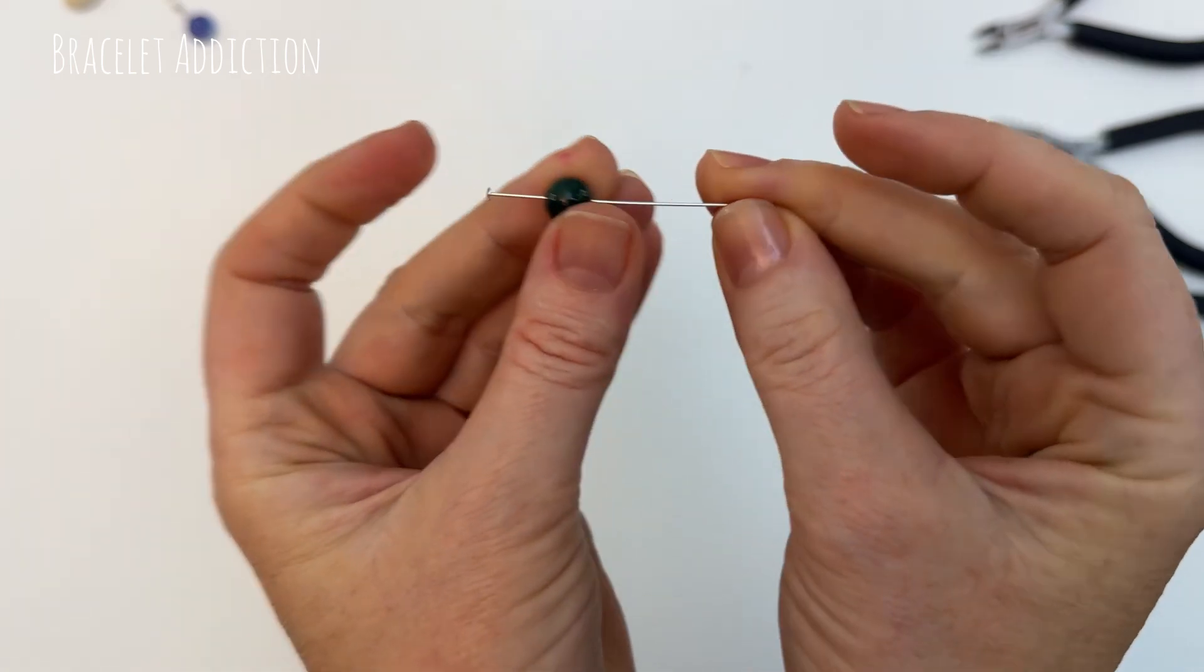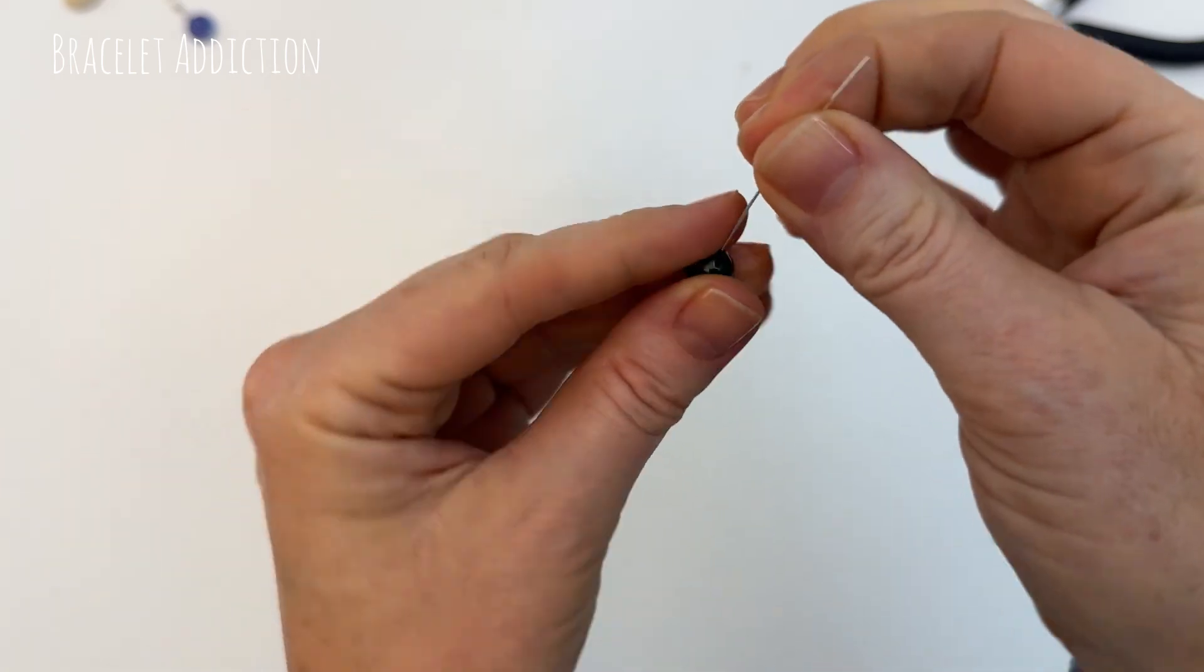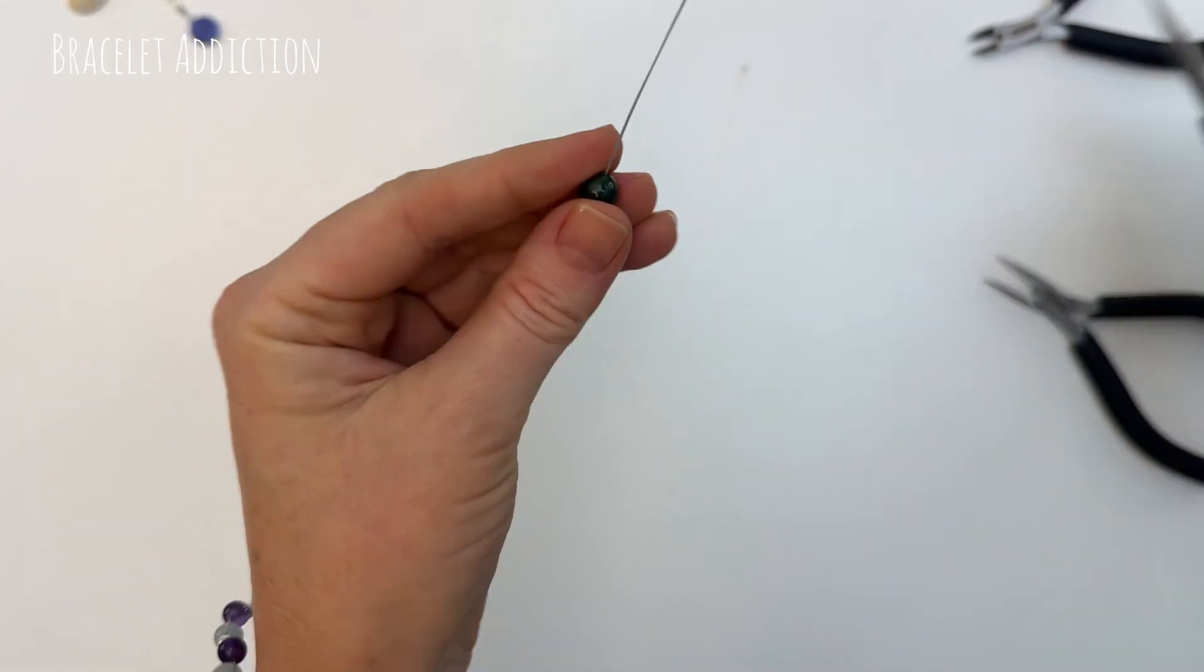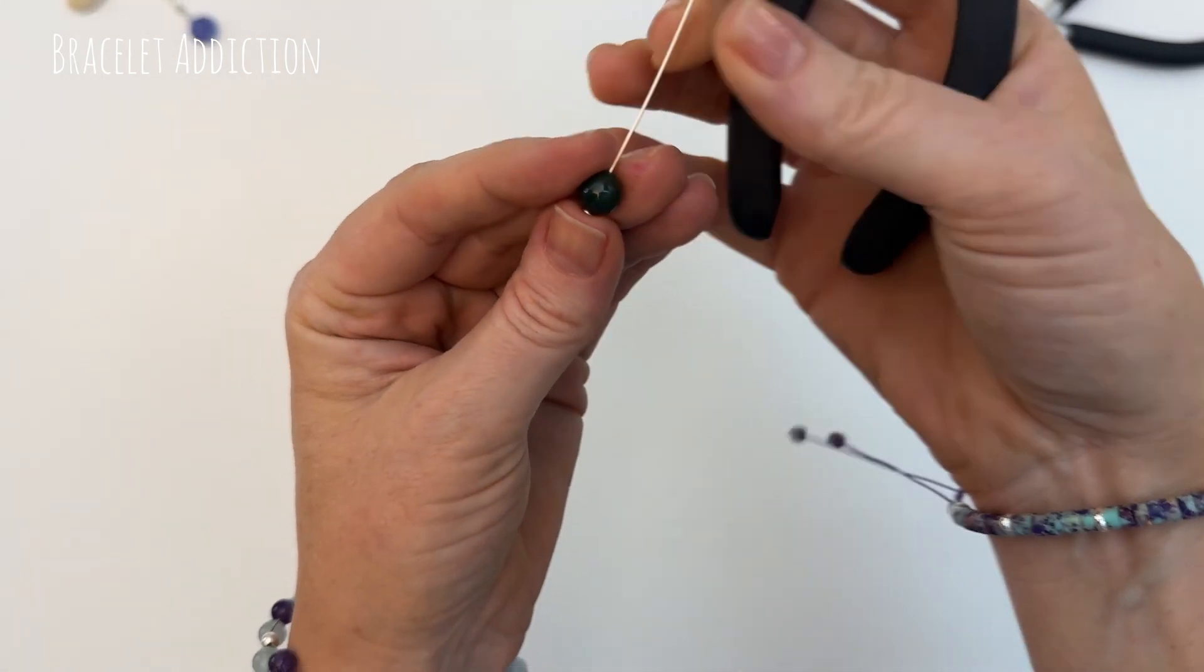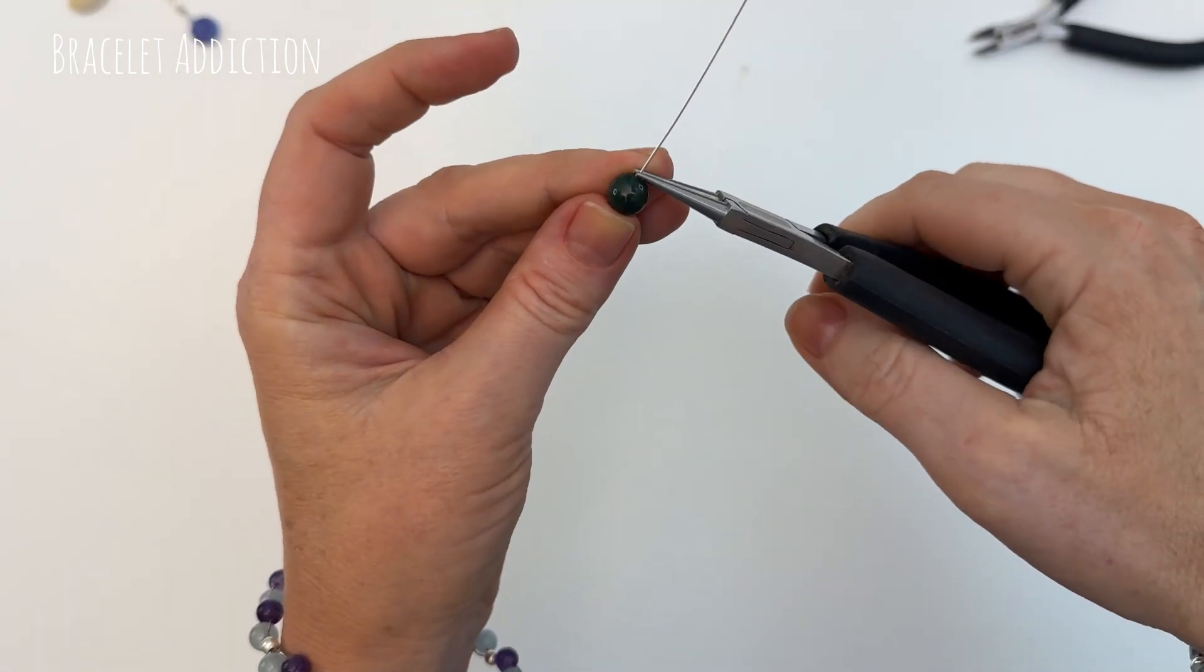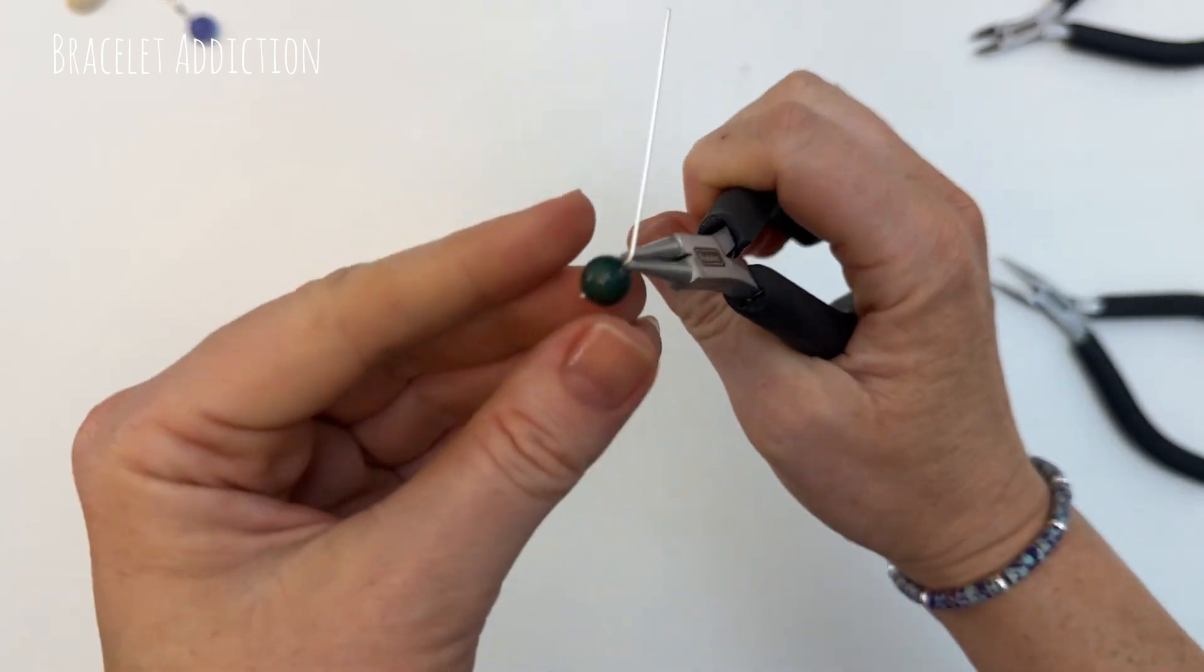So place your bead onto the head pin so that it sits at the end. Now coming in with our pliers we grab it as close as we can and then push the wire back to make a bend in the head pin.